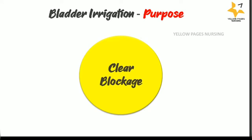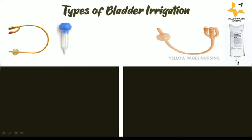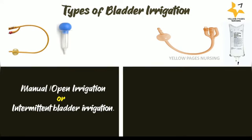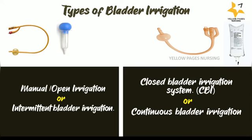Looking into the types of bladder irrigation, there are two types: open and closed. Open irrigation is also called manual or intermittent bladder irrigation. Closed bladder irrigation is also called continuous bladder irrigation.